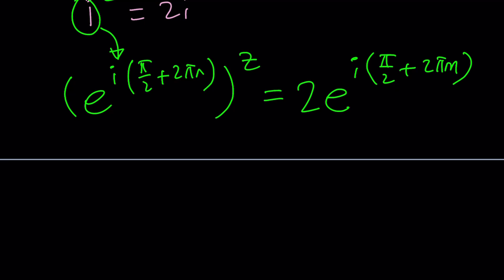Now, in this case, to simplify things a little bit, if n is equal to 0, then we're going to get e to the power i z pi over 2 equals 2 times e to the power i times pi over 2. Pi over 2 plus 2 pi n. So you can also assume m equals 0, which is something that I'm going to do towards the end.